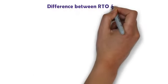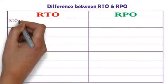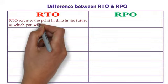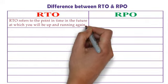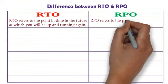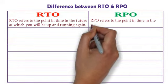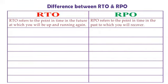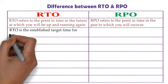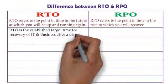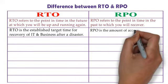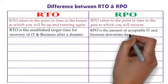Difference between RTO and RPO. RTO refers to the point in time in the future at which you will be up and running again. On the other hand, RPO refers to the point in time in the past to which you will recover. RTO is the established target time for recovery of IT and business after a disaster. On the other hand, RPO is the amount of acceptable IT and business downtime during a disaster.